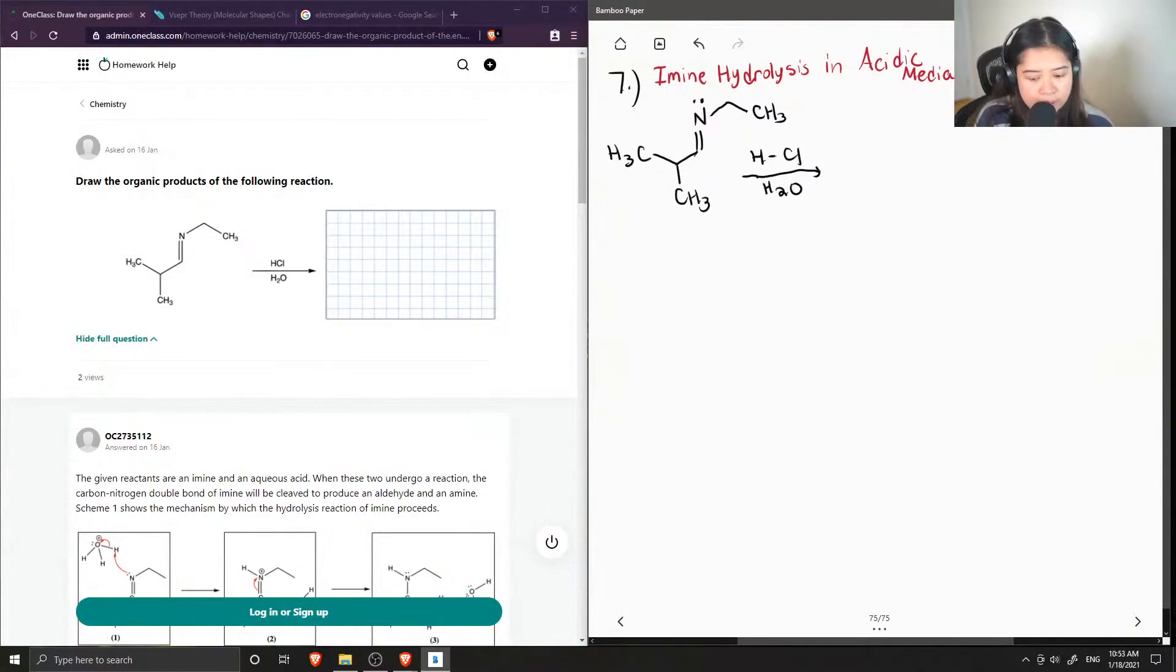Okay, so let me show the mechanism for this reaction. So first we have the lone pair on the nitrogen come in to abstract this proton, kicking off the chlorine.